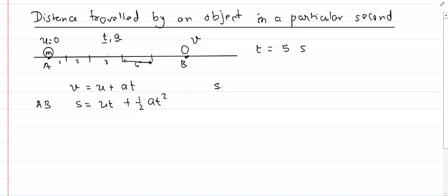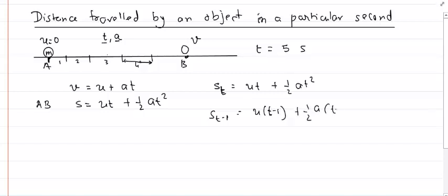What we do is: S_t equals ut plus half at squared is the total distance traveled from point A in t seconds. And the distance traveled in t minus one seconds would be S_(t-1) equals u(t-1) plus half a(t-1) squared.